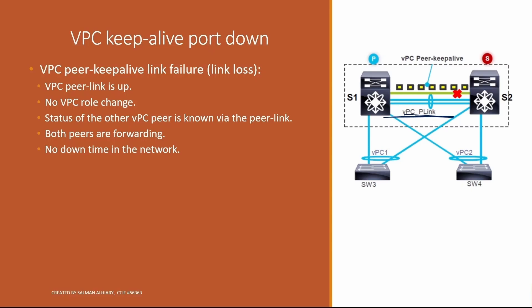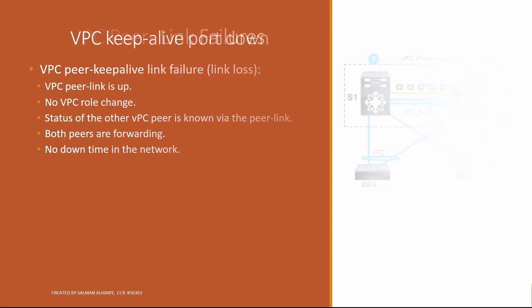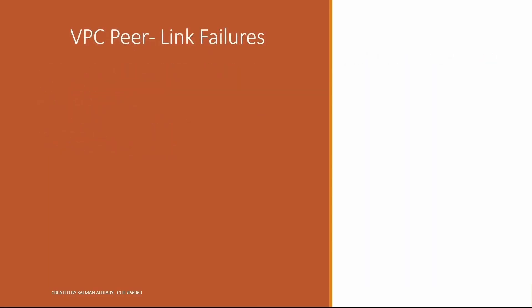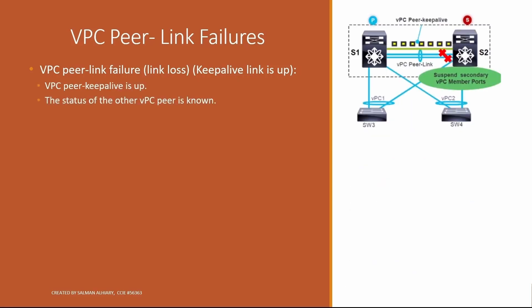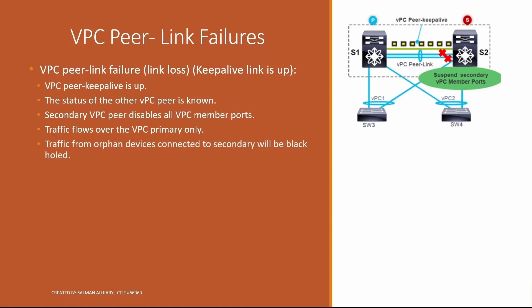When the VPC peer keep-alive is lost but the peer link is up, nothing will happen — everything is good. Now for VPC link failures: the first scenario is peer link failure while the keep-alive link is up. The status of the other VPC peer is known via the keep-alive, so the secondary VPC peer disables all its VPC member ports. Traffic flows over the VPC primary only.